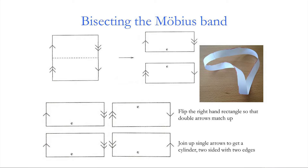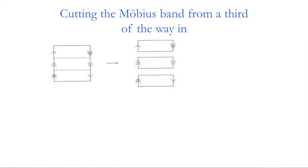Now a test of the technique: instead of cutting the Möbius band down the centre, start cutting from one-third of the way in. With a Möbius band in hand and scissors starting a third of the way in, what will you end up with? Let's work it out using the cutting-and-pasting technique before revealing the answer.